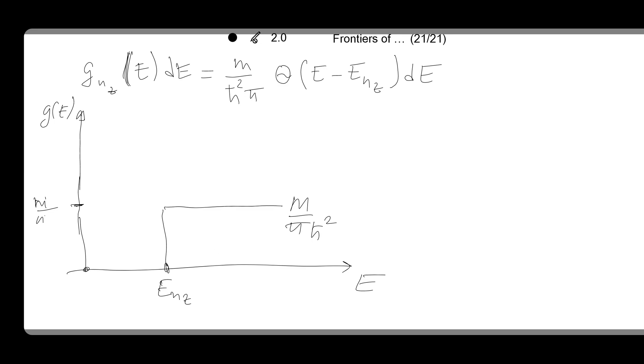And so we have lots of sub-bands. Then in the general case you can write it down. In the general case g of E dE is m over h-bar squared pi, then you sum all these sub-bands, summing by nz of these thetas (E minus Enz) dE.